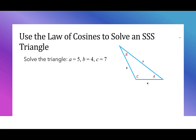Our next example uses the law of cosines to solve a side-side-side triangle. In this triangle, we have side a is 5, side b is 4, and side c is 7. To mix things up, I'm going to use the formula a squared equals b squared plus c squared minus 2bc cosine of A. We're using the law of cosines to find our angle A. We'll start by plugging in the values we already know: 5 squared equals 4 squared plus 7 squared minus 2 times 4 times 7 times the cosine of A. 5 squared is 25.